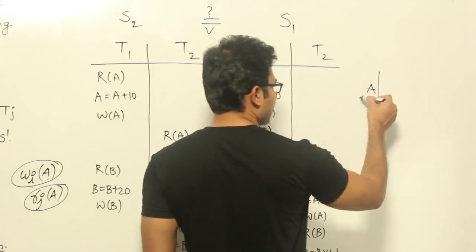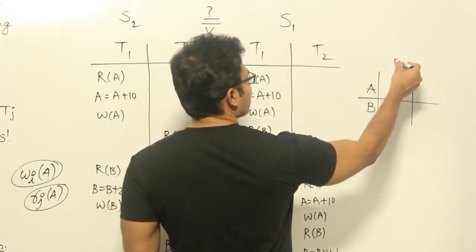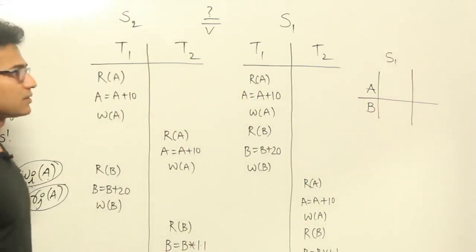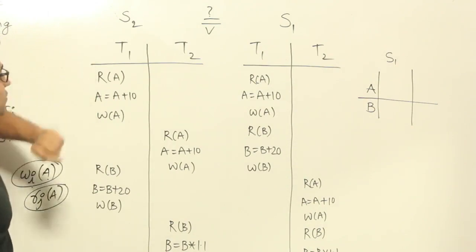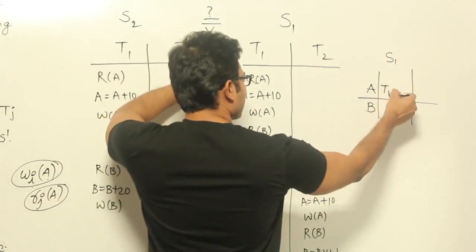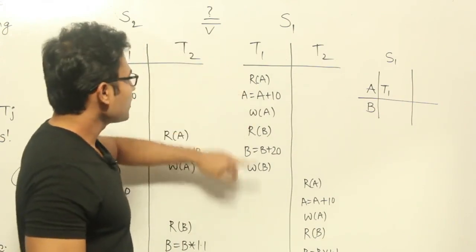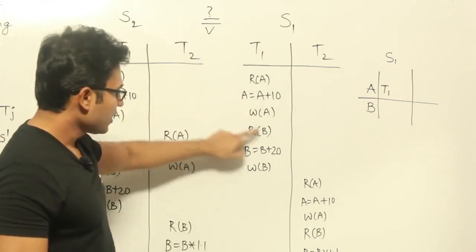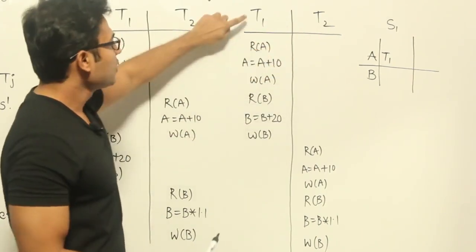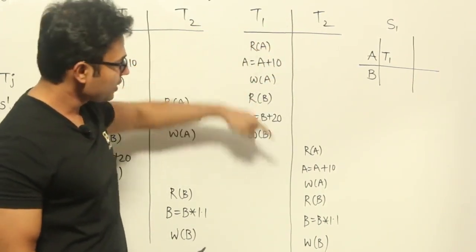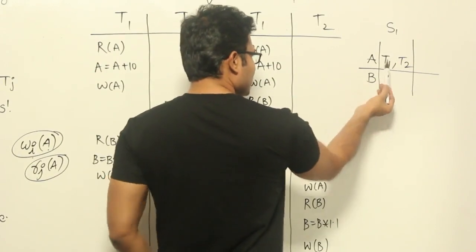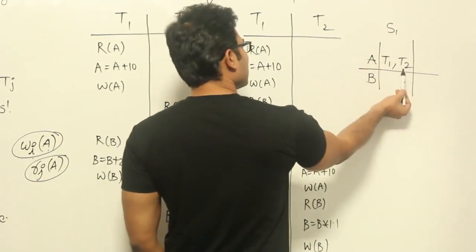Now let's see who reads first and who writes last in both schedules. In schedule S1, who reads A first? T1 reads it first. And who writes A last? If you look at A, there is a write, and again there is a write. So among all the writes to A, the last one to write is T2. So for A: T1 is reading it first in schedule S1 and T2 is writing it last.